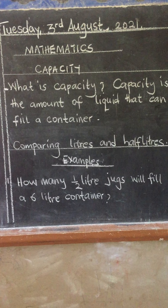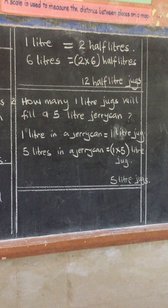So capacity is the amount of liquid that can fill a container. Now we are going to compare liters and half liters. Question one: how many half-liter jugs will fill a 6-liter container? We know that in one liter there are two half liters. So one liter equals two half liters. Therefore, 6 liters will equal 2 times 6, giving us 12 half-liter jugs.